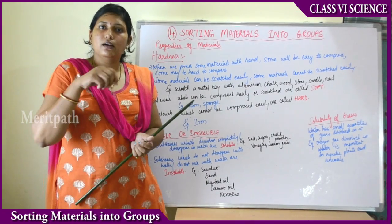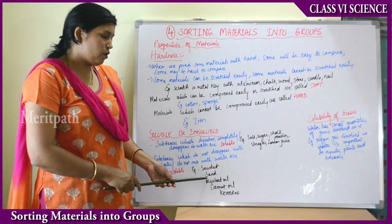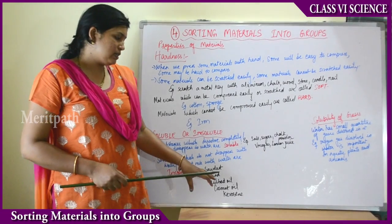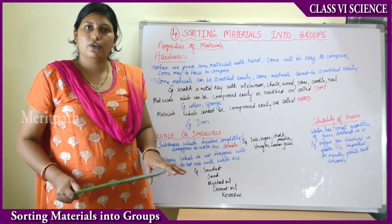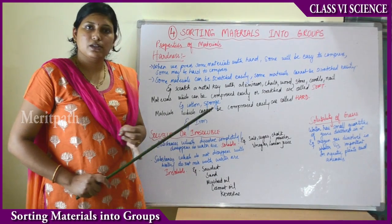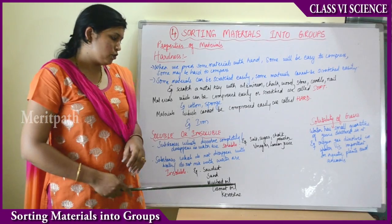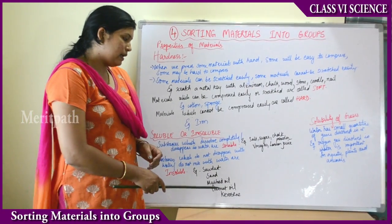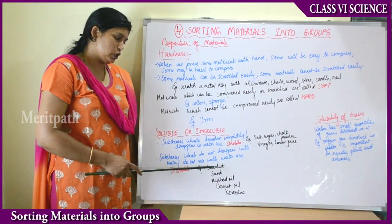Sand also doesn't dissolve in water. Even if you take a glass of water and mix sand in it, you can still see the sand particles — they do not disappear. Mustard oil, coconut oil, and kerosene are also insoluble in water. These oils do not mix with water because their density is different from water's density. Oils are non-polar substances and water is a polar substance, so they do not dissolve in each other — oils only float on water.